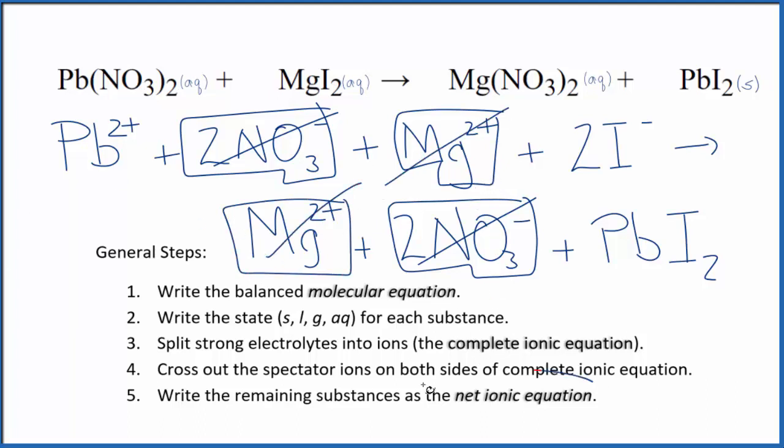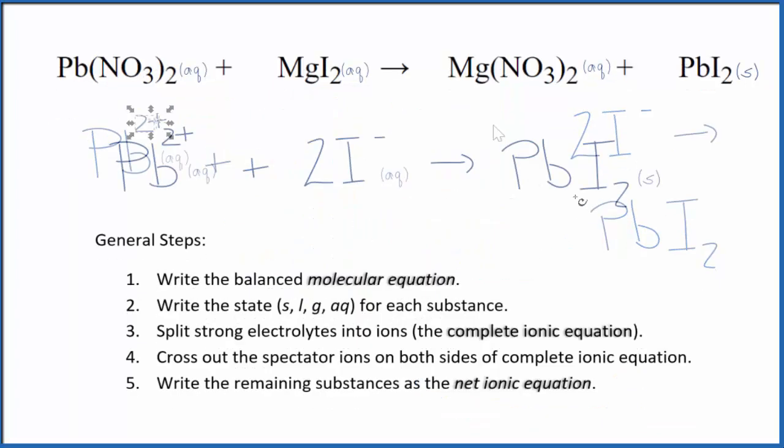That makes this the net ionic equation for Pb(NO3)2 plus MgI2. I'll clean it up. Write the states. We'll have our net ionic equation. So this is the balanced net ionic equation for Pb(NO3)2 plus MgI2.